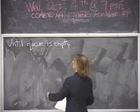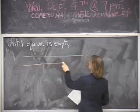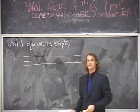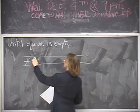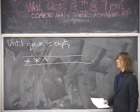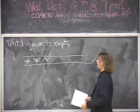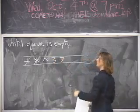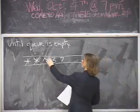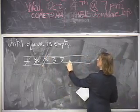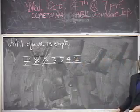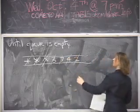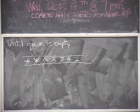Let's do a level-order traversal on the expression tree. Start with a queue containing just the root (the plus sign). Dequeue the root, visit it, and enqueue its children — the multiplier and the exponentiation sign. Dequeue the multiplier, visit it, and enqueue its children 3 and 7. Dequeue the exponentiation sign, visit it, and enqueue 4 and 2. Then dequeue 3, visit it — no children to add. Same for 7, 4, and 2. That's the level-order traversal.